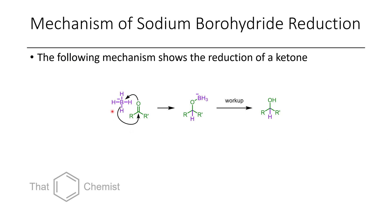The mechanism of this reaction is twofold. First, the borohydride acts as a hydride donor to the carbonyl, but it also acts as a Lewis acid. The carbonyl coordinates to the boron, which liberates a hydride, forming a boronate complex that, upon workup, affords the primary or secondary alcohol. This shows the reduction of a ketone, but the same mechanism holds true for an aldehyde — you just have an H instead of R prime.